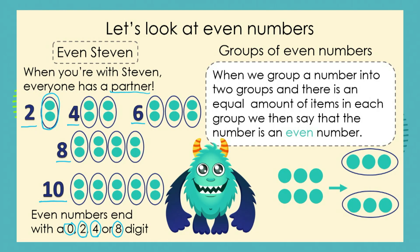Let's have a look at what else Even Stephen has to say — groups of even numbers. When we group a number into two groups and there is an equal amount — so this means there is the same amount of items in each group — then we say that the number is even. For example, Even Stephen has six dots and he has put them into groups of three. The first group has three dots and the second group also has three dots. We can see that there is an equal amount in each group, so this means that it is an even number.